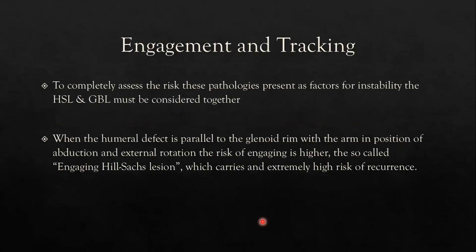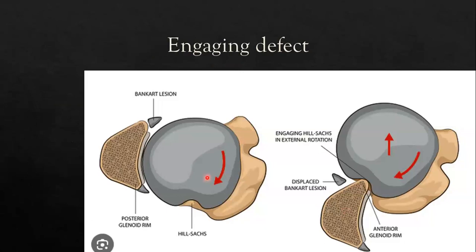Engagement requires assessing humeral bone loss and glenoid bone loss together, not independently. When the humeral defect is parallel to the glenoid rim with the arm in abduction and external rotation, the risk of engaging is higher — this is the engaging Hill-Sachs lesion. When you take the arm into abduction and external rotation with a Bankart tear, the Hill-Sachs lesion can engage the anterior rim of the glenoid, acting as a fulcrum that pushes the head anteriorly inferiorly, creating a propensity toward dislocation.